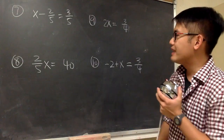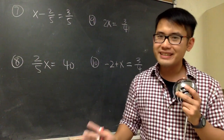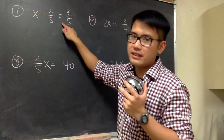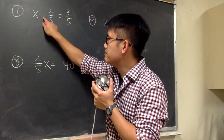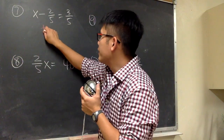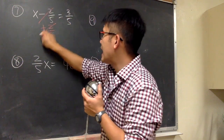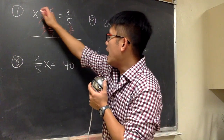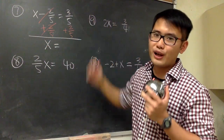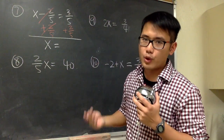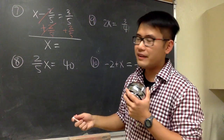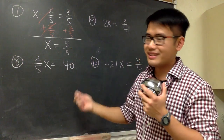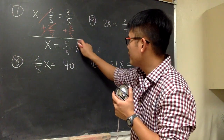Here I have a few more examples. Even though they all require one step, it's not easy to do them without showing work. Let's look at the first one: x minus 2 over 5 is equal to 3 over 5. We are subtracting 2 over 5, so we have to add 2 over 5 to both sides, so they cancel. x will be by itself, equal to 3 over 5 plus 2 over 5. The denominators are the same, so we just add the tops: 3 plus 2 is 5, giving us 5 over 5, which equals 1. So x is equal to 1.